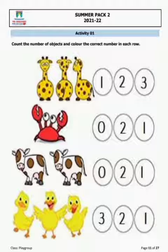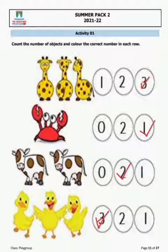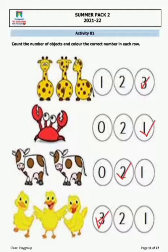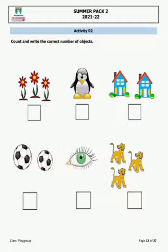Playgroup class, یہ دیکھیں آپ کے سامنے page ہے — 'Count the number of objects and color the correct number in each row.' ہم نے objects کو count کرنا ہے، اور جن پہ میں نے ٹک کیا ہے آپ نے ان میں color کرنا ہے۔ آپ نے ٹک نہیں کرنا، صرف color کرنا ہے۔